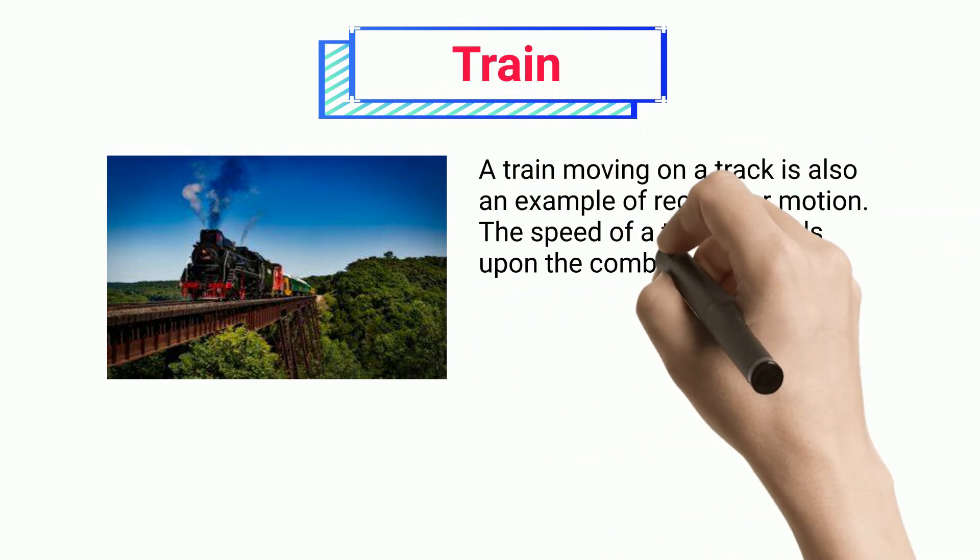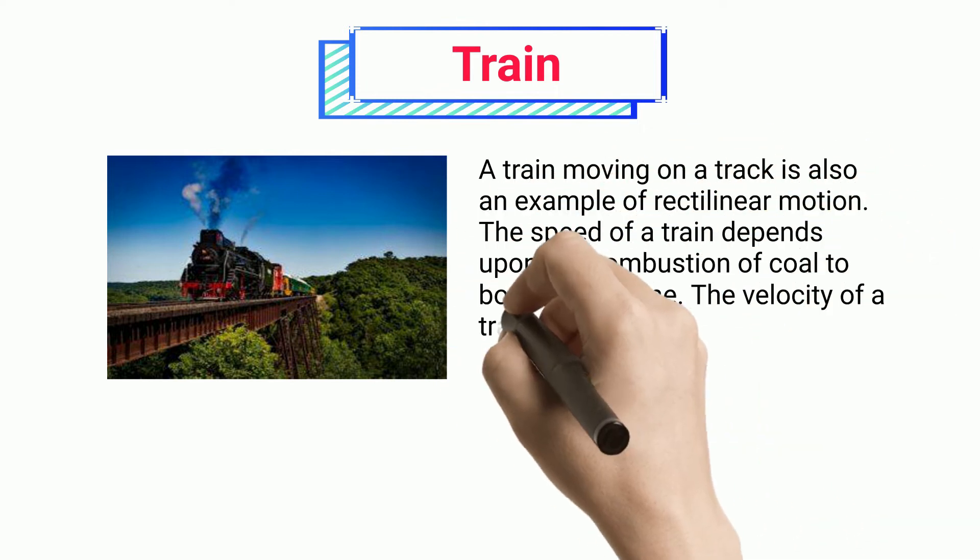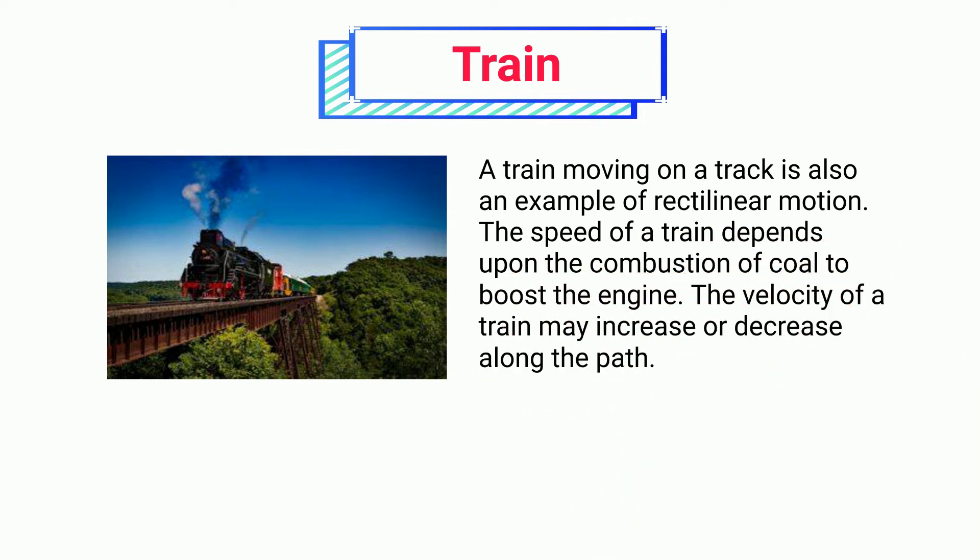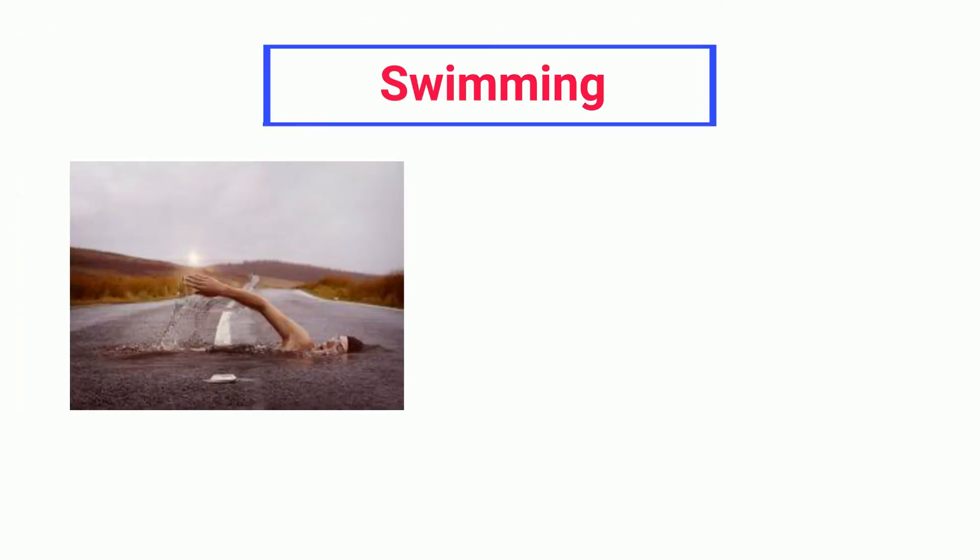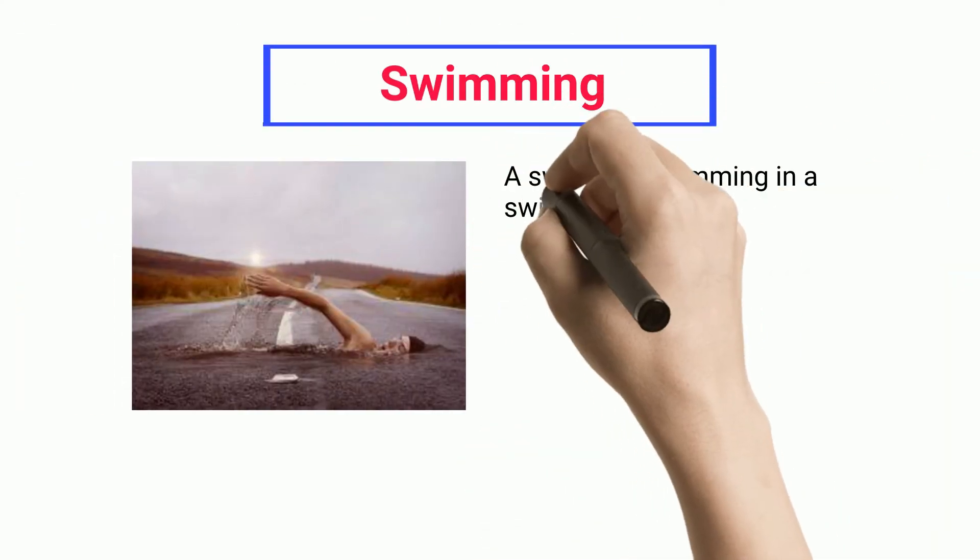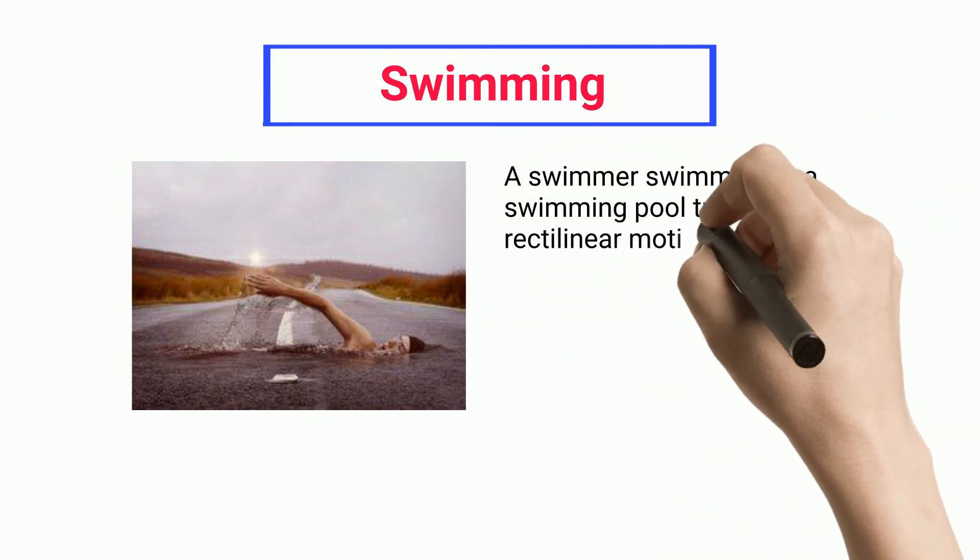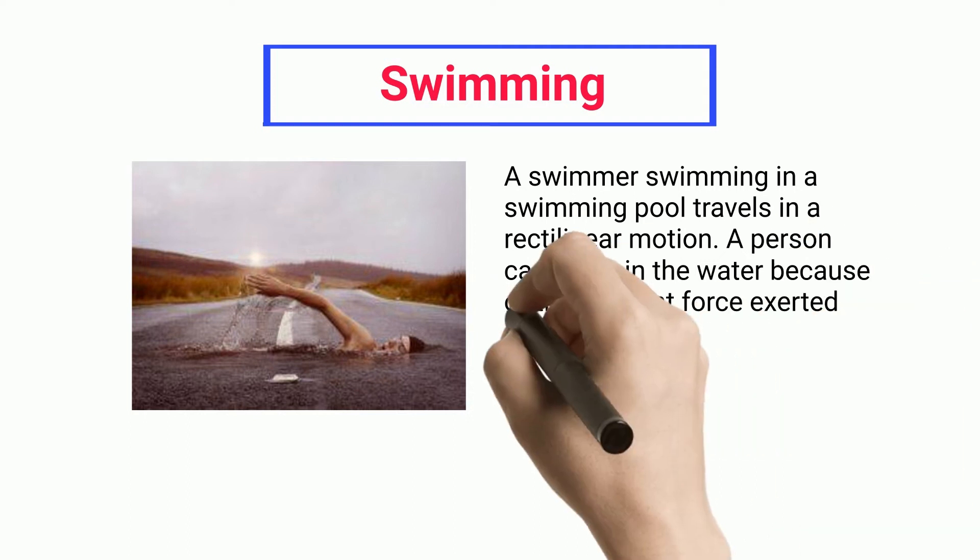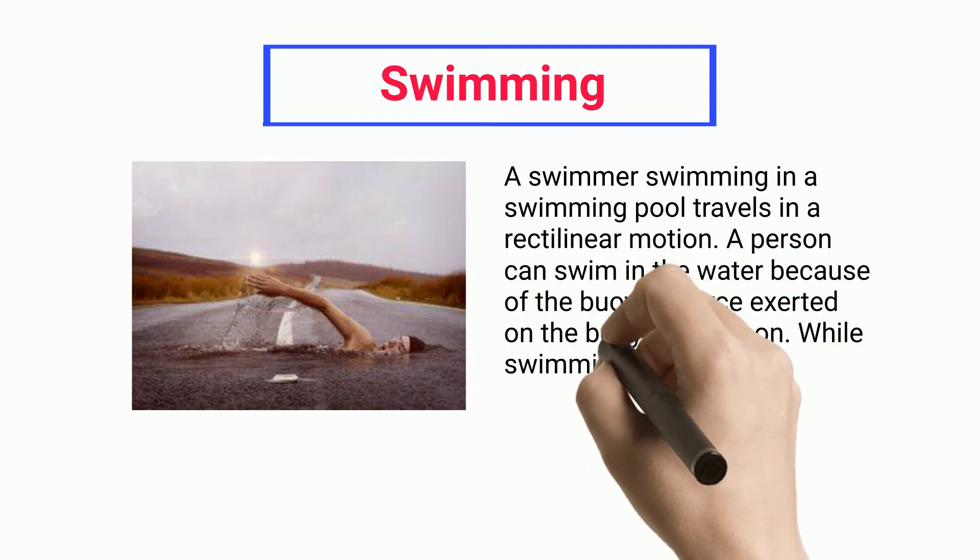The speed of a train depends upon the combustion of coal to boost the engine. The velocity of a train may increase or decrease along the path. Swimming: A swimmer swimming in a swimming pool travels in a rectilinear motion.